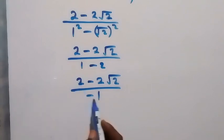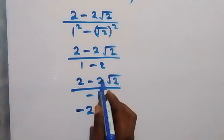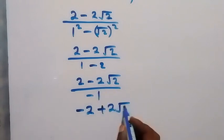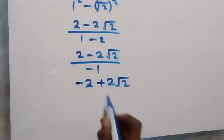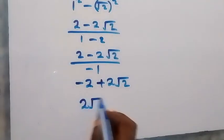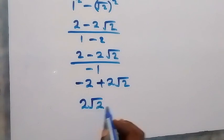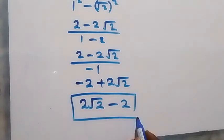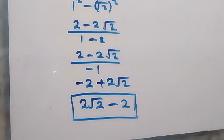We have (2 minus 2 root 2) divided by minus 1. Dividing gives us 2 root 2 minus 2. Therefore, the final answer to this problem is 2 root 2 minus 2.